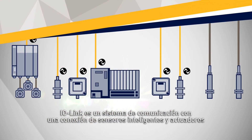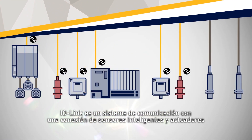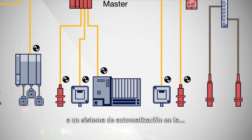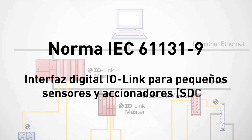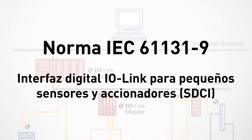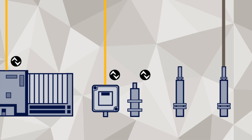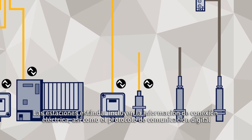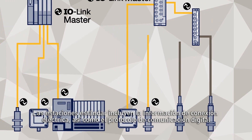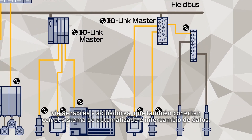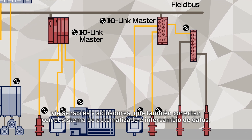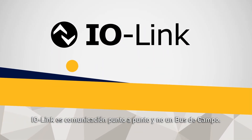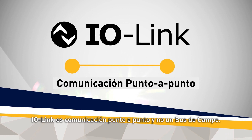IO-Link is a communication system for the connection of intelligent sensors and actuators to an automation system under the IEC 61131-9 standard, known as the IO-Link Digital Interface for Small Sensors and Actuators. The standardization includes both the electrical connection data as well as a digital communication protocol, allowing sensors and actuators to communicate with the automation system in data exchange. IO-Link is a point-to-point communication, not a fieldbus.